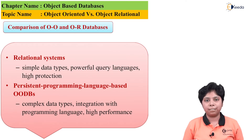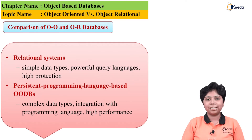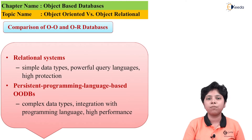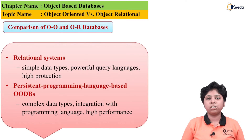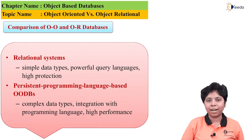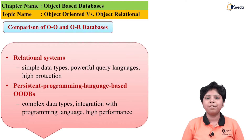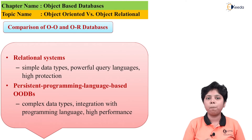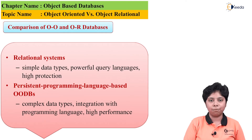The object-relational mapping blurs these boundaries because it first extends from the relational schema and then implements object-oriented features to it. The conversion from the object-oriented paradigm to the relational paradigm is not done here, so the schema becomes more powerful in an object-relational mapping rather than in a plain object-relational database.